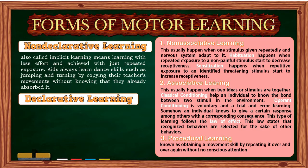Non-associative learning usually happens when one stimulus is given repeatedly and the nervous system adapts to it. The two main types are habituation and sensitization. Habituation happens when repeated exposure to a non-painful stimulus decreases receptiveness. Sensitization happens when repetitive exposure to an identified threatening stimulus increases receptiveness. Associative learning usually happens when two ideas or stimuli are connected, such as when movement and music become linked as one. Associative learning can produce cause-and-effect scenarios. Two known types are classical conditioning, which helps an individual understand the bond between two stimuli, and operant conditioning, which is voluntary trial-and-error learning where a response is paired with a corresponding consequence, following the law of effect.